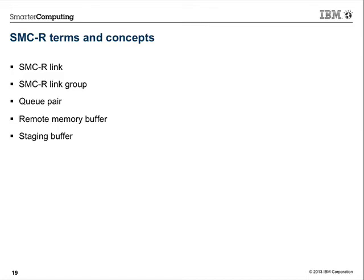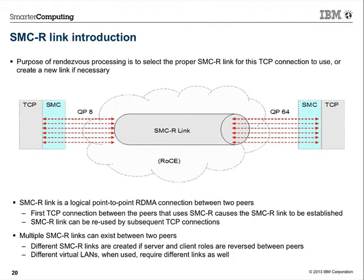Chart 19 introduces lower-level details: the notions of a link, a link group, queue pairs, and memory — including what it costs to enable this feature, how to control it, and how to observe it. Chart 20 introduces the point-to-point link concept — essentially a pipe between two peers. Two queue pairs are connected using reliably connected queue pairs, allowing the TCP and SMC stack to work together.